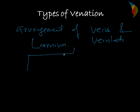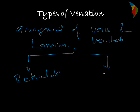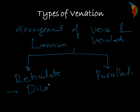There are mainly two types of venation. The first one is reticulate venation and the second is parallel venation. Reticulate venation is mostly found in dicotyledons and parallel venation is mostly found in monocots. This is the main characteristic distinguishing monocot and dicot plants.